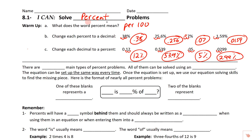When we talk about solving percent problems, there are actually three main types, and every single one of them can be solved using an equation — which is the approach we're going to take. The cool thing is we can set them up the same way every single time, and once it's set up, we just use our equation-solving skills. Here's the format: blank is blank percent of blank.